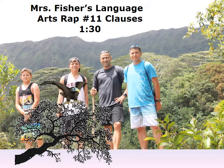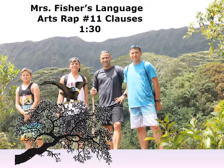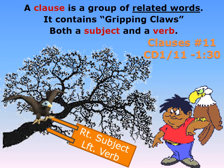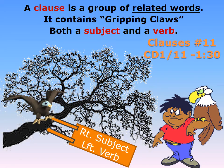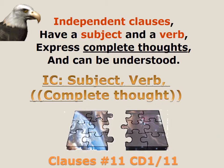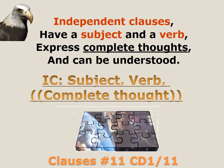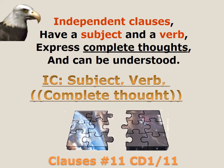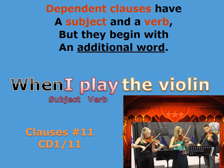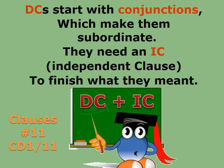Clauses. A clause is a group of related words that contains both a subject and a verb. Independent clauses have a subject and a verb, express complete thoughts, and can be understood on their own. Dependent clauses also have a subject and a verb, but they begin with an additional word — they start with conjunctions, which make them subordinate.